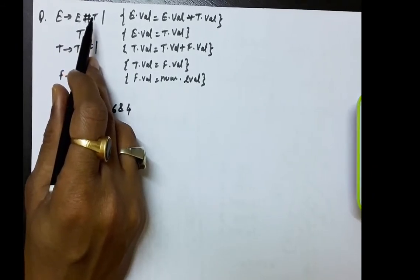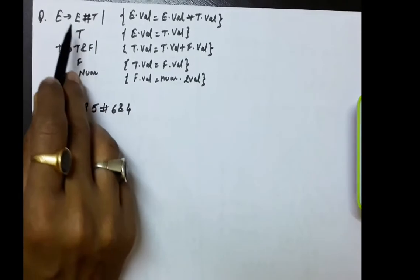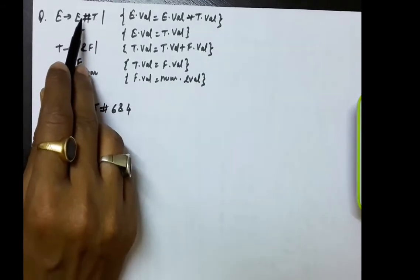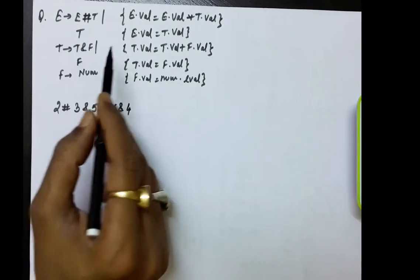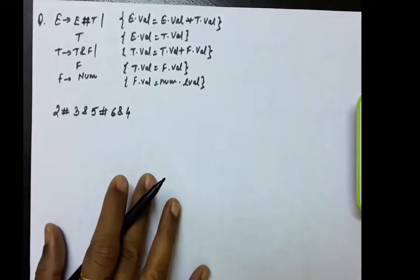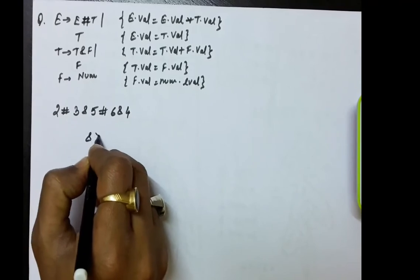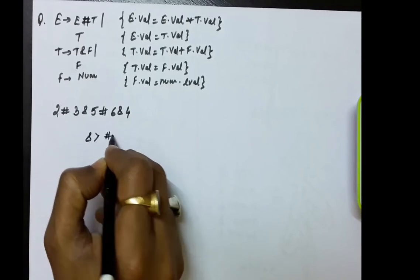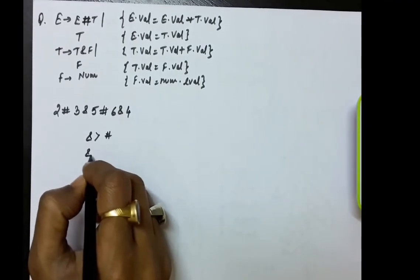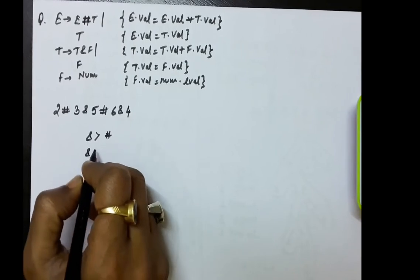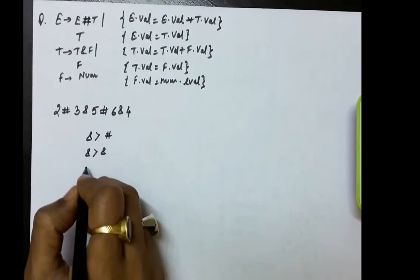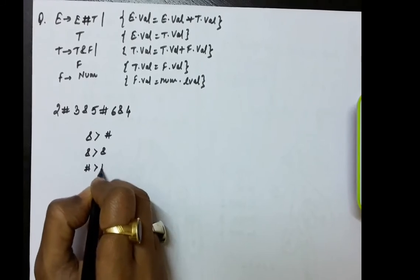Both productions are left-recursive. This means that hash is left-associative and T is also left-associative. So E is left-associative and T is also left-associative. Since hash actually represents the multiplication sign and 'and' represents the plus sign, according to the rules, 'and' (plus) is having greater precedence than hash (multiplication). And since both 'and' and hash are left-associative, the left operand will have more precedence than the right.